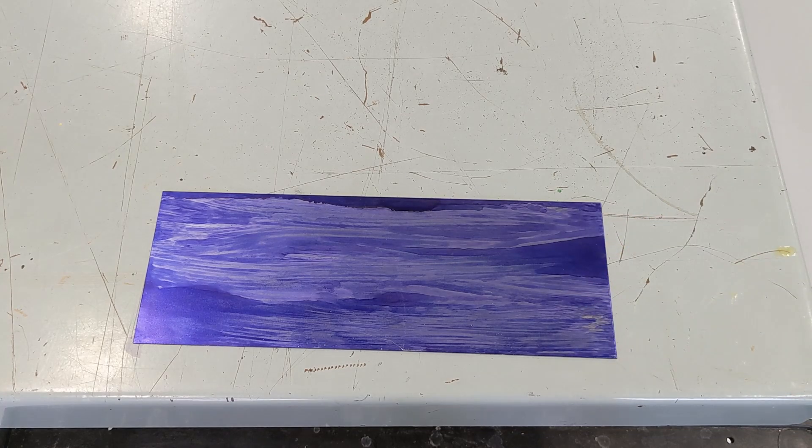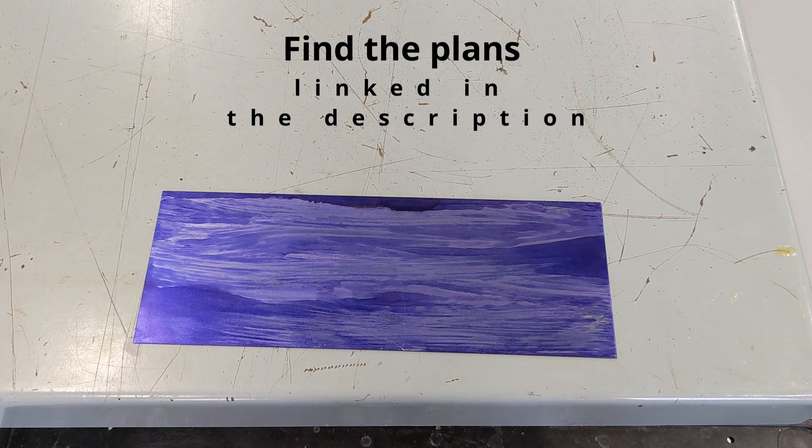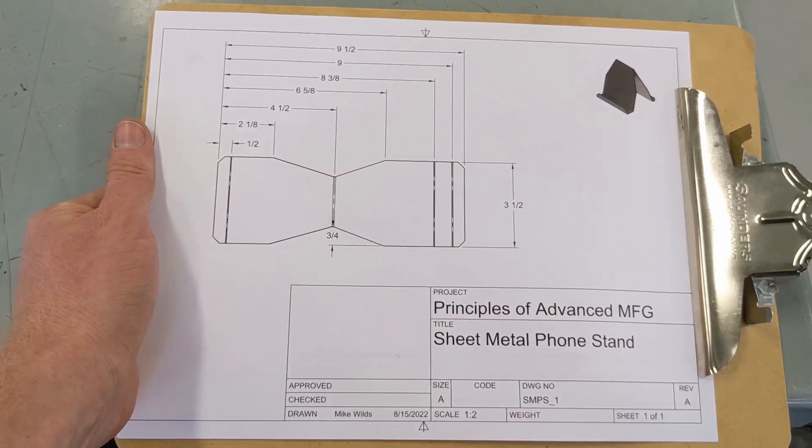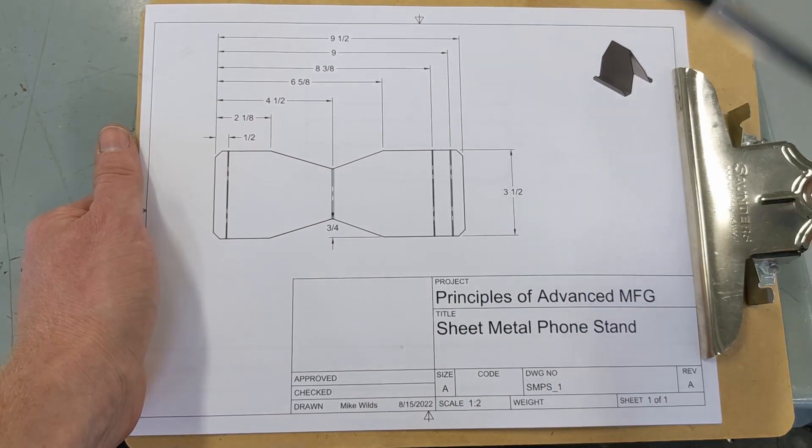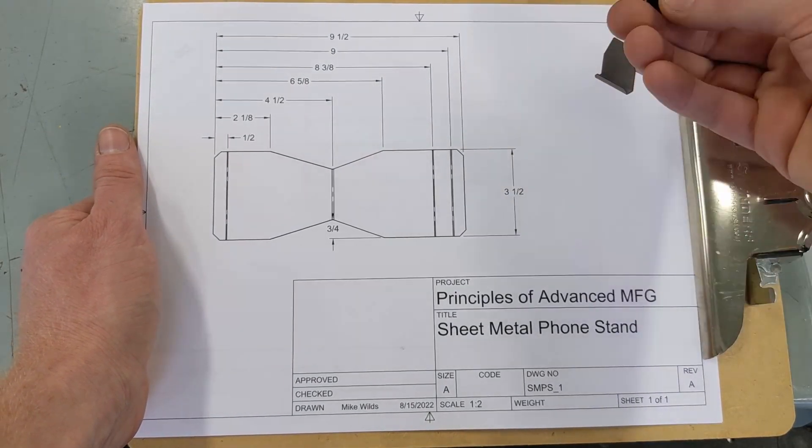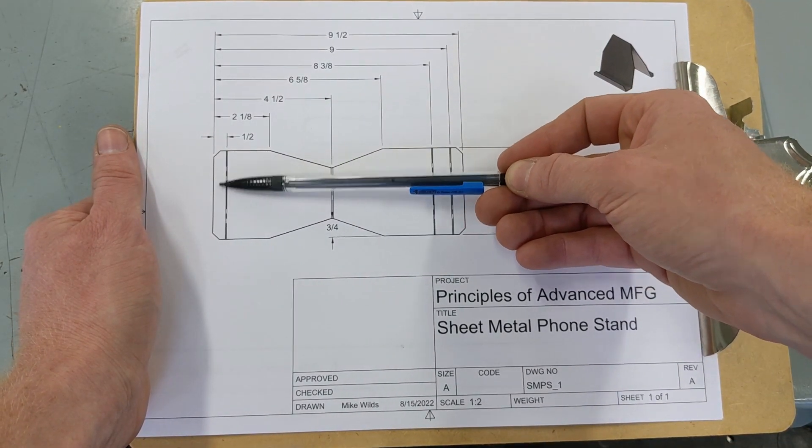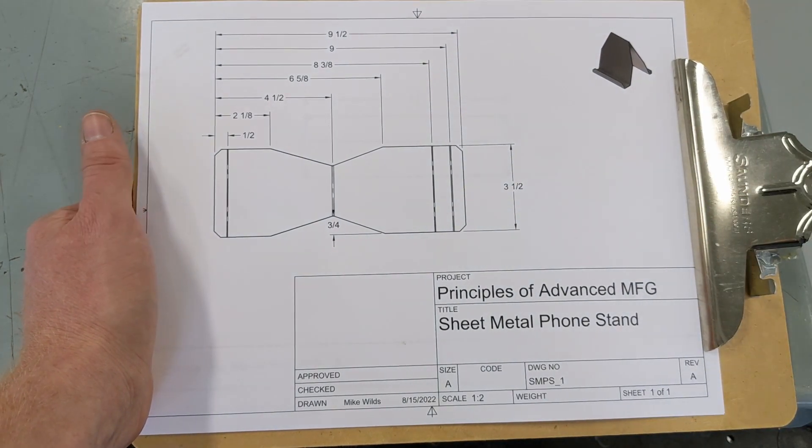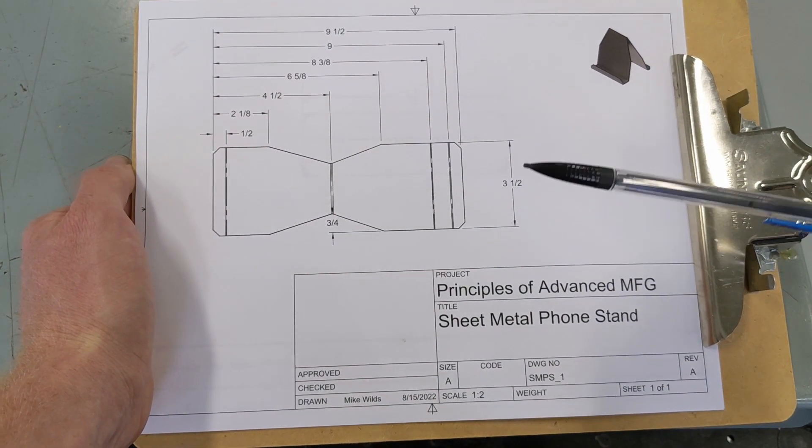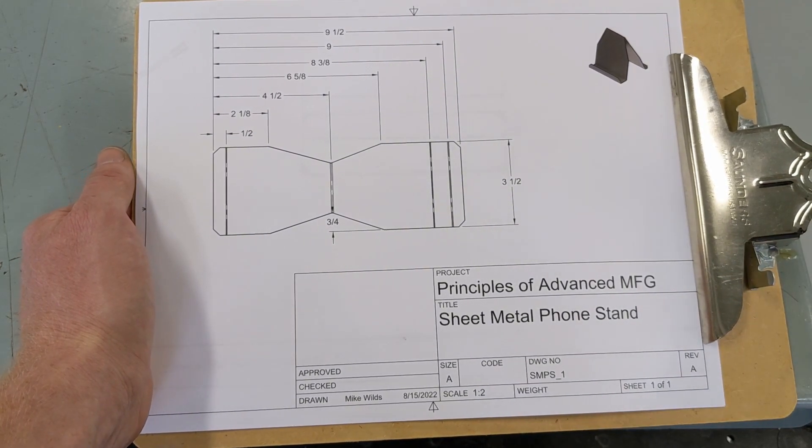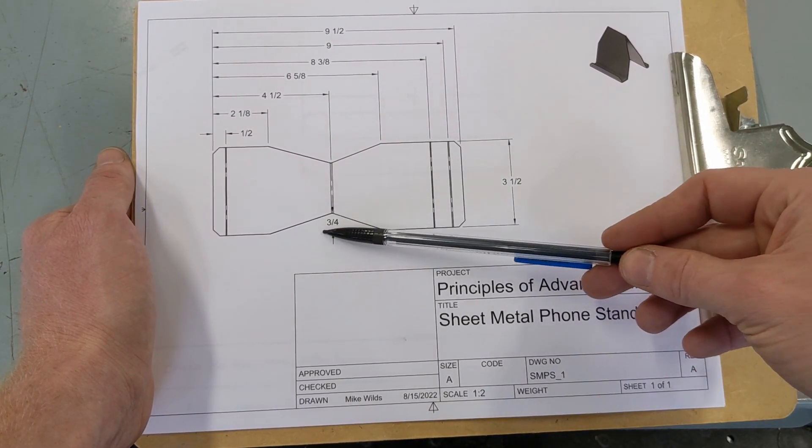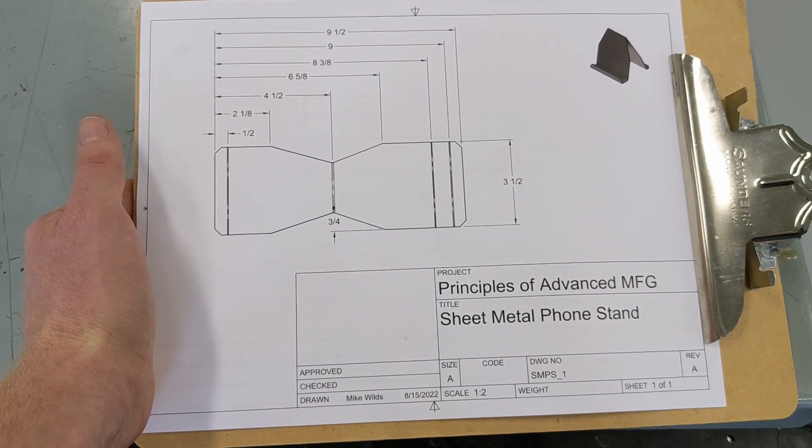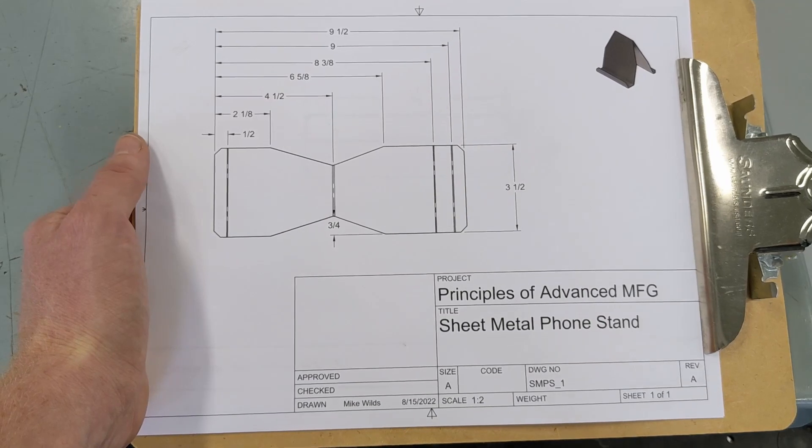Once we have our piece of metal the size we need to actually make our phone stand, we're going to transfer the layout from our plans to our metal. Here are our plans. We're going to start with our width lines, which if we have it oriented in this direction are our vertical lines, and we're just going to work our way from left to right, measuring from the far left edge all the way over, marking a line all the way through to get all our width dimensions. Then we're going to come back through and get our only height dimension or height line that we need to mark, which is three quarter inch into our material from each edge roughly in the center of our material on that four and a half inch line.